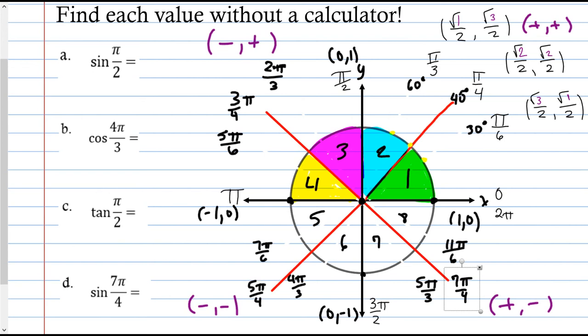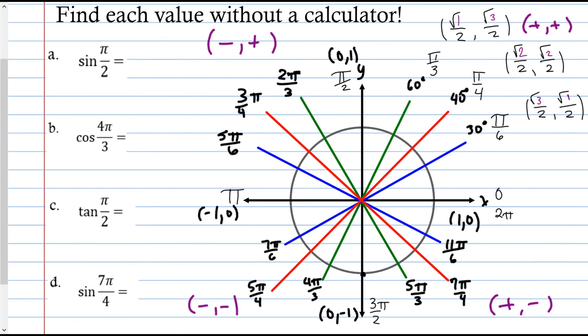Quick reminder: sine is the y-coordinate, cosine is the x-coordinate, and tangent is sine over cosine, which is y divided by x. Sine corresponds to the opposite side of the triangle, which is the y direction. So for part A: sine of pi over 2 — I look for pi over 2 on the unit circle. The y-coordinate there is 1. So the answer is 1.